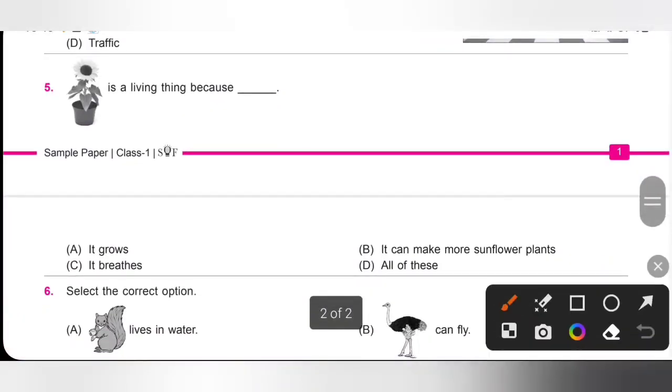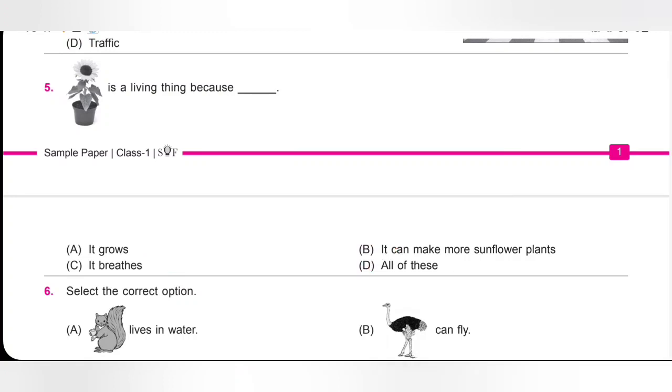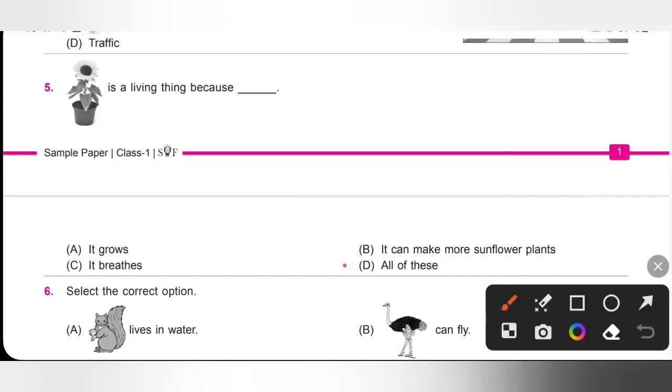Fifth one, sunflower plant is a living thing because, option A, it grows. Yes, sunflower plant will grow. B, it makes more sunflower plants, that is reproduction. Yes, sunflower plant is a living thing because it breathes. So sunflower plant is a living thing because it grows, it can make more sunflower plants, and it breathes. Option D, all of these, is the correct answer.